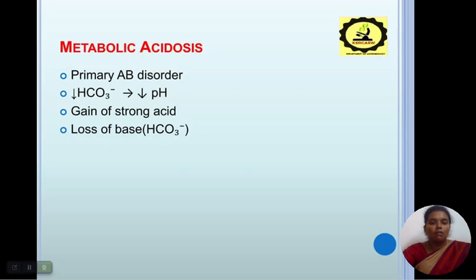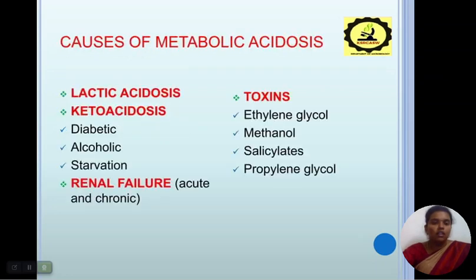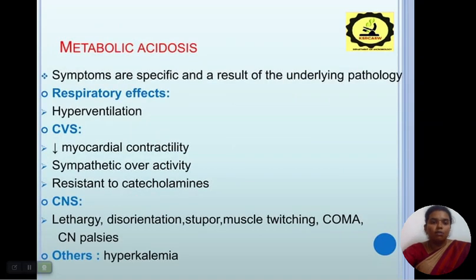Metabolic acidosis: primary disorder — HCO₃⁻ concentration is low, pH is low, due to gaining of strong acid or loss of base. Causes include lactic acidosis; ketoacidosis (diabetic, alcoholic, and starvation); renal failure (acute or chronic); toxins including ethylene glycol, methanol, oxalate, and propylene glycol. Symptoms: respiratory effects — hyperventilation; cardiovascular effects — low myocardial contractility, sympathetic overactivity, resistance to catecholamines; CNS effects — lethargy, disorientation, muscle stiffening, coma, or CNS paralysis; other — hyperkalemia.